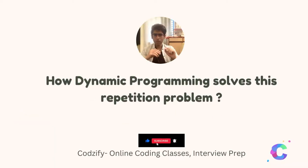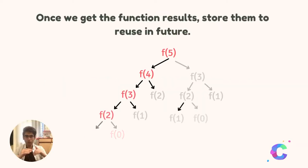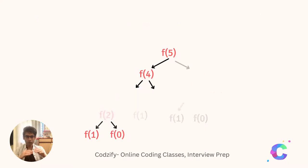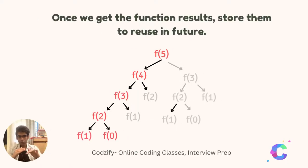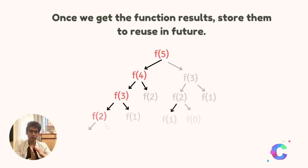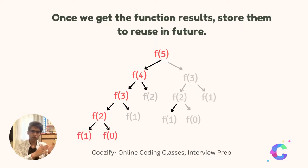How does dynamic programming solve this repetition problem? What dynamic programming does is it calls all the functions one by one—f of five, f of four, f of three, f of two, f of one, and f of zero—and stores those functions into a table. Whenever we need those functions again in the future, we use them from the table and reuse them. This saves much time for the program.